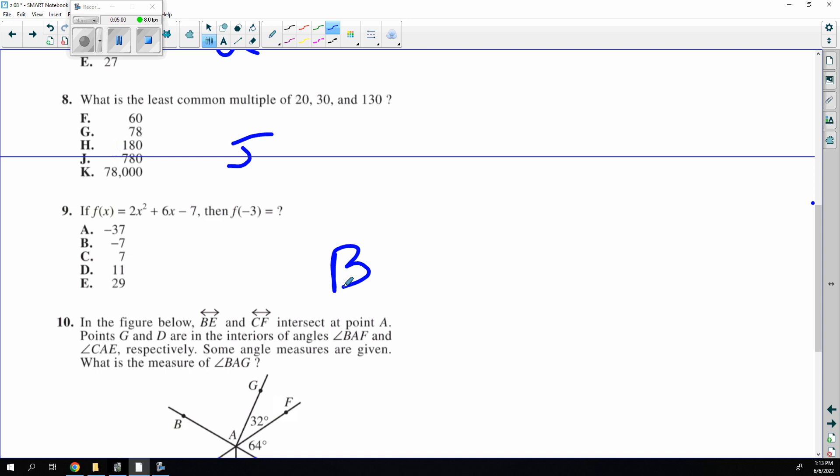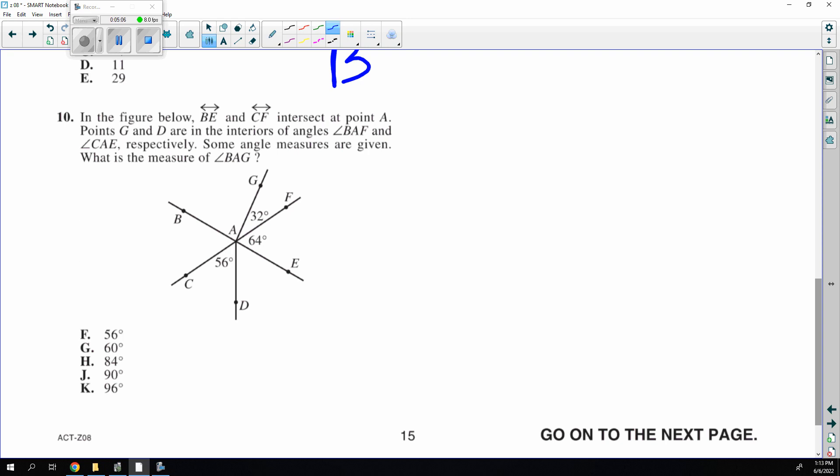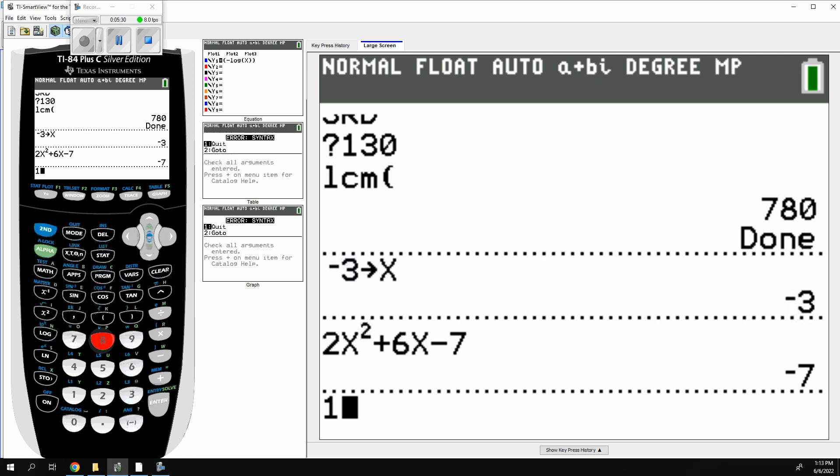Number 10 is finding an angle. Well, without even looking at the question, I know that these three so-called complete the line. So they make 180, and you could subtract the other two. And that is the question. 180 minus 32 minus 64 is what they're looking for. And that answer is 84.